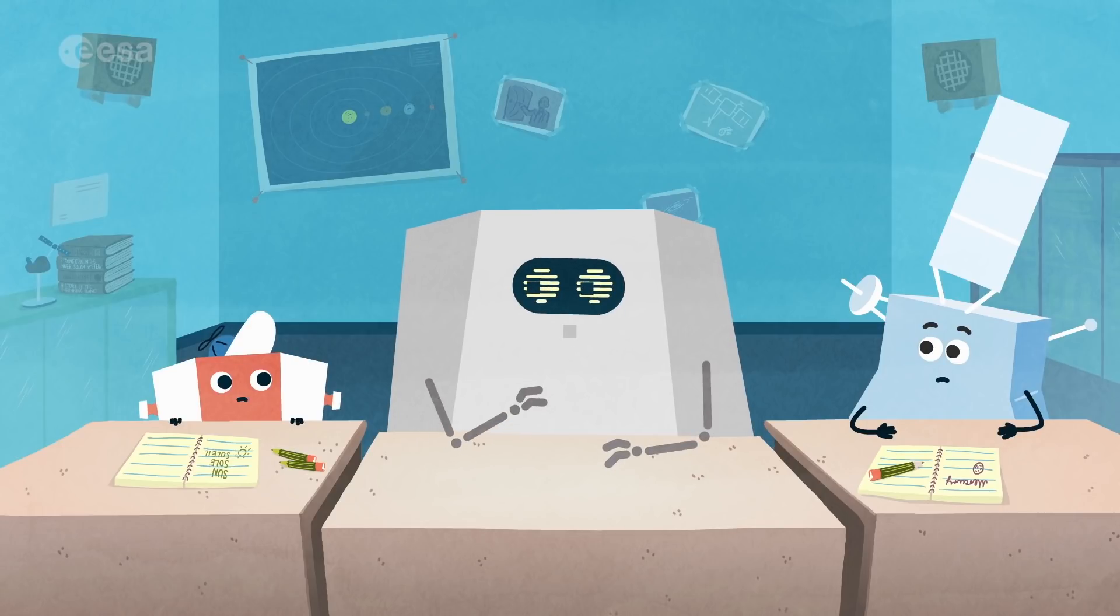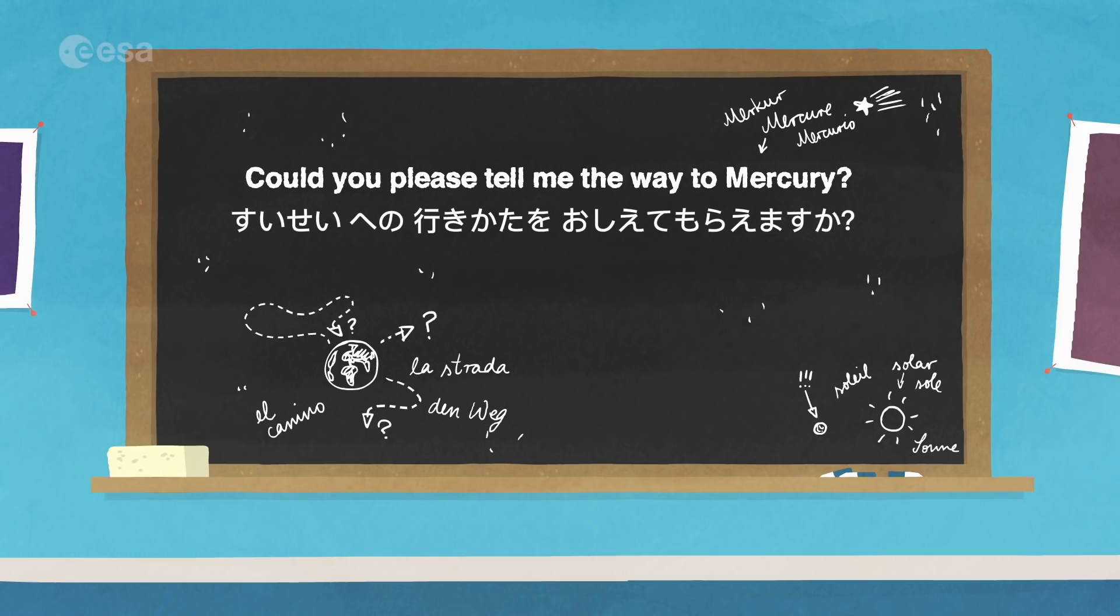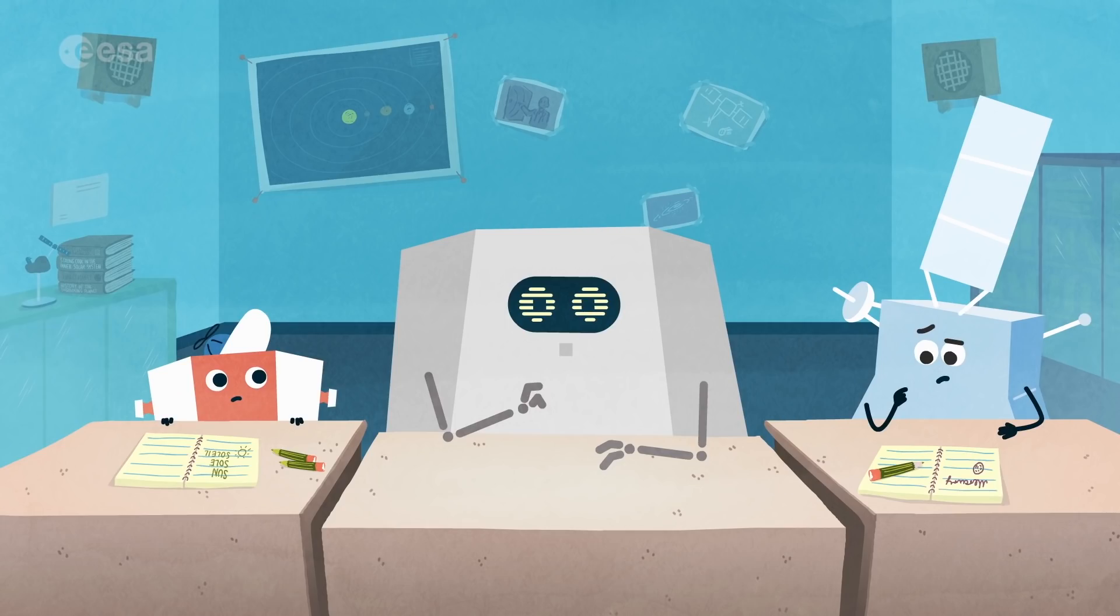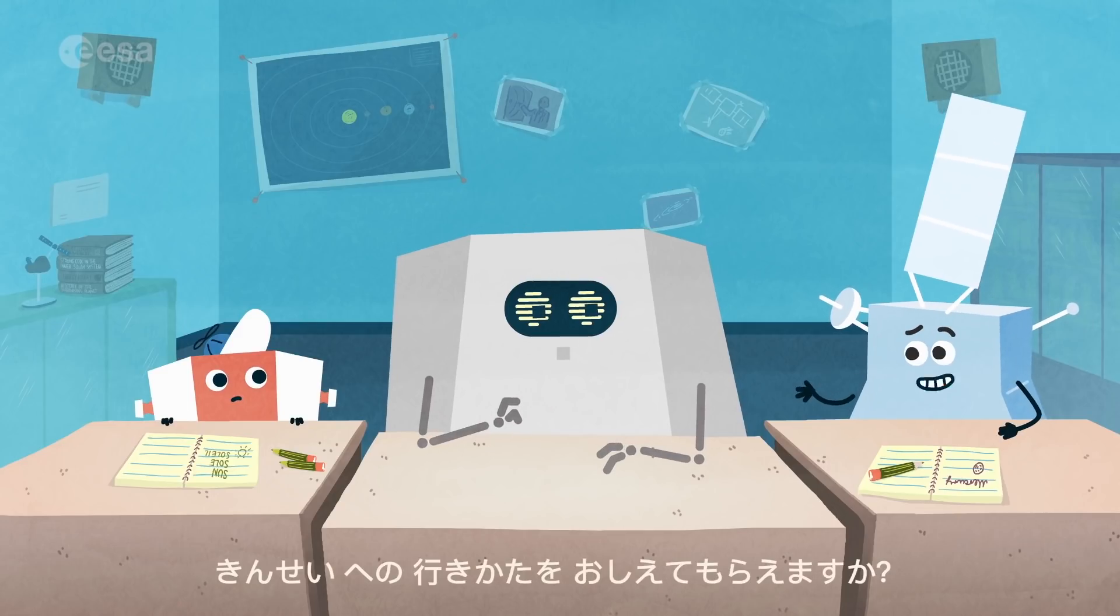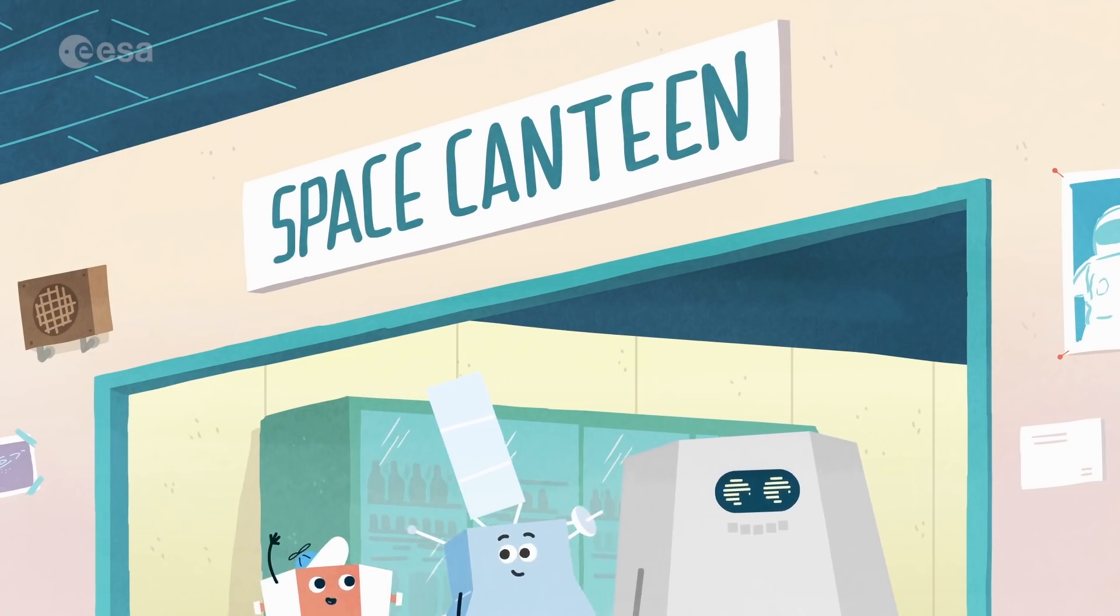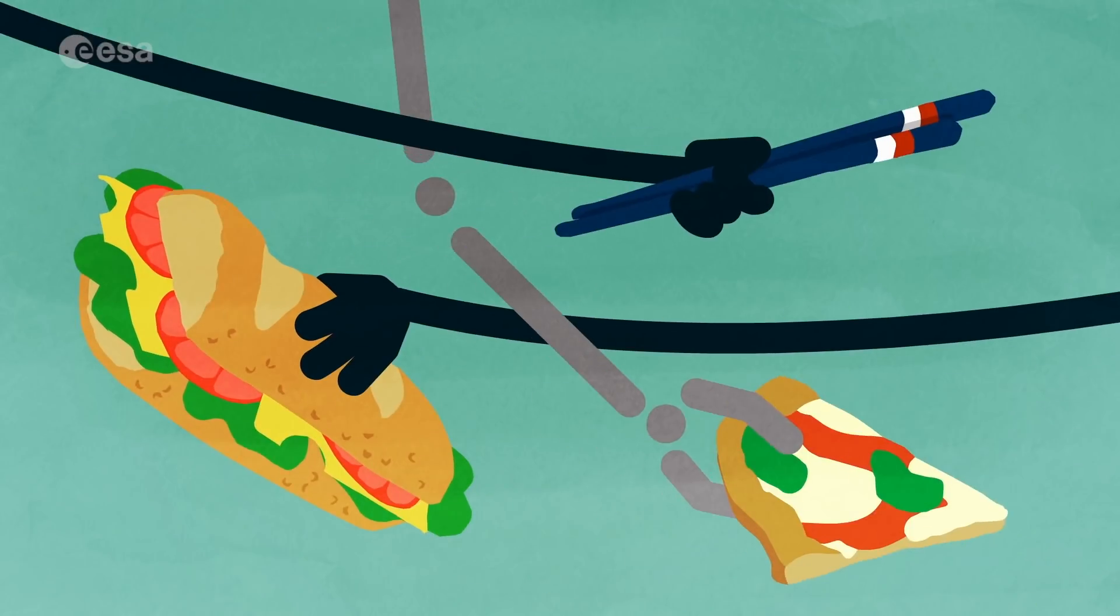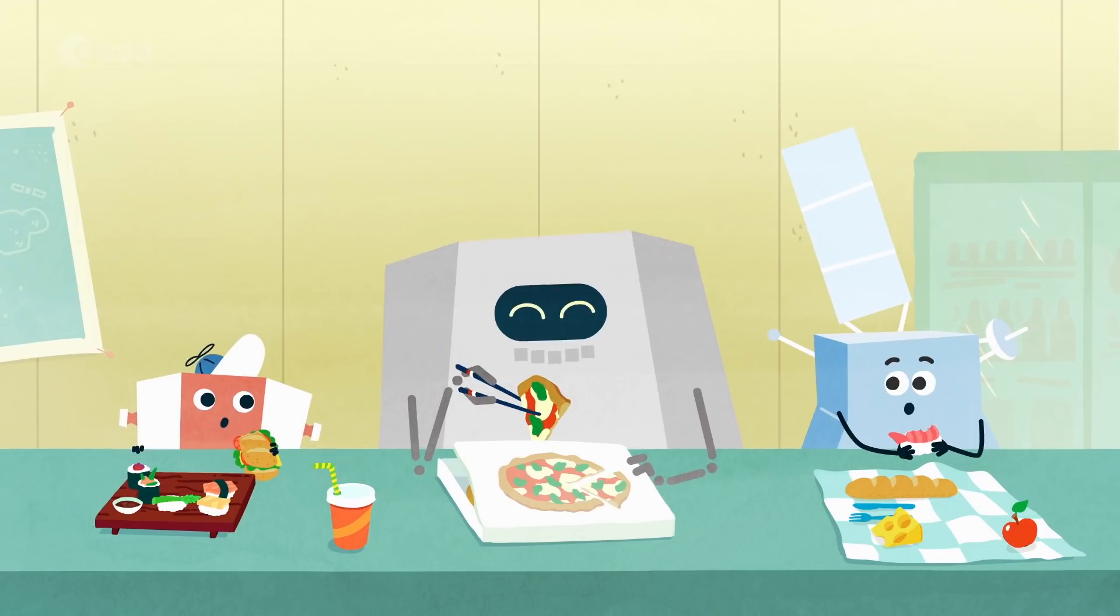As well as math, physics and engineering, we also started to learn each other's languages. Mio is from Japan and is very curious about all the different countries and languages in Europe, while I try to learn some Japanese. We began to understand some of the differences between our cultures, which is important because we will spend many years traveling and working together.